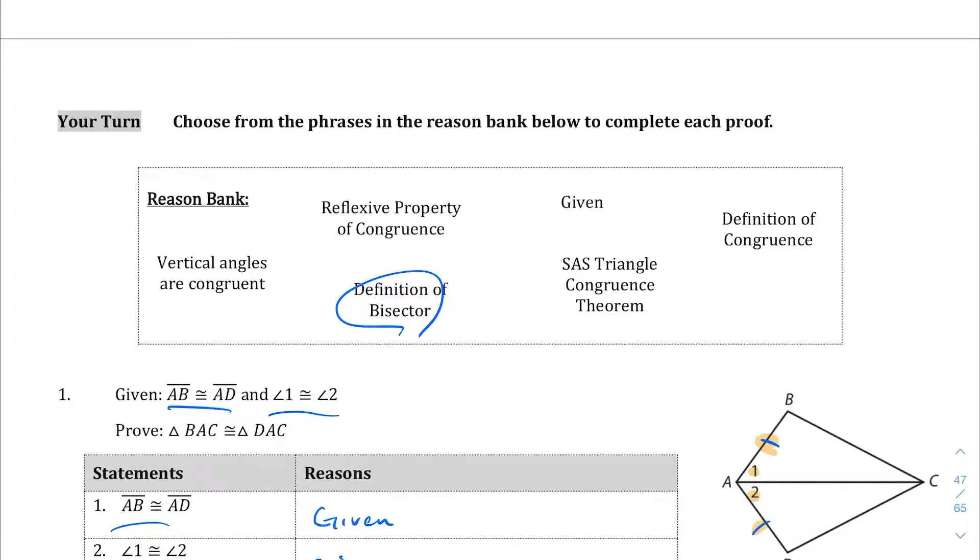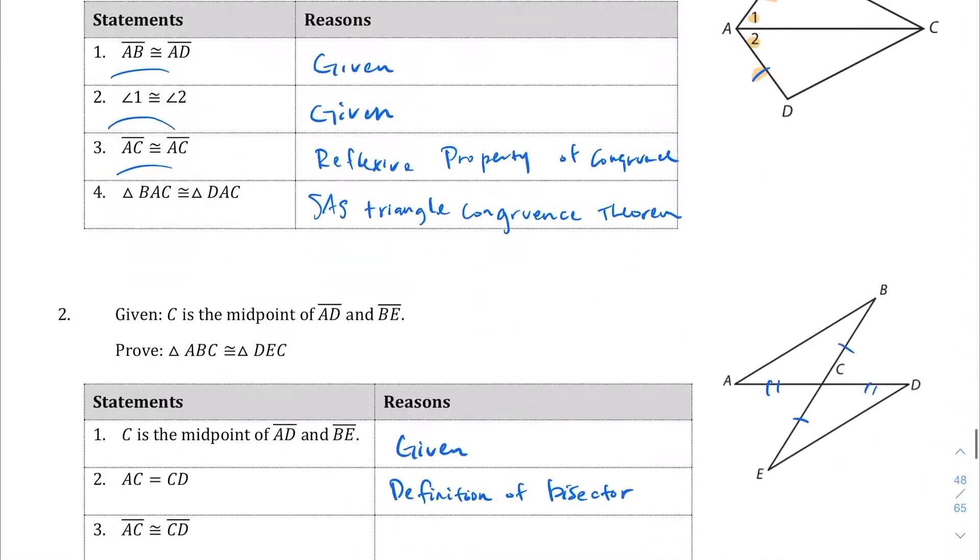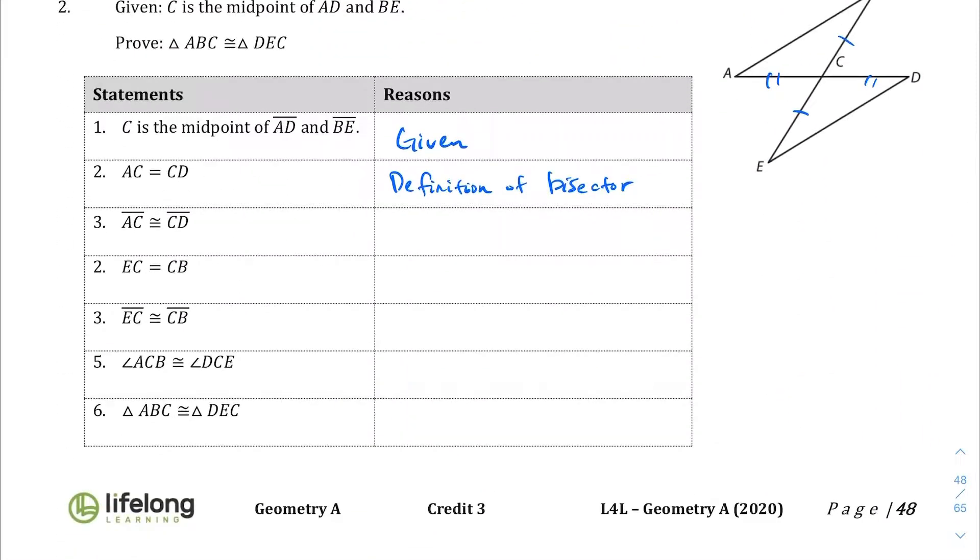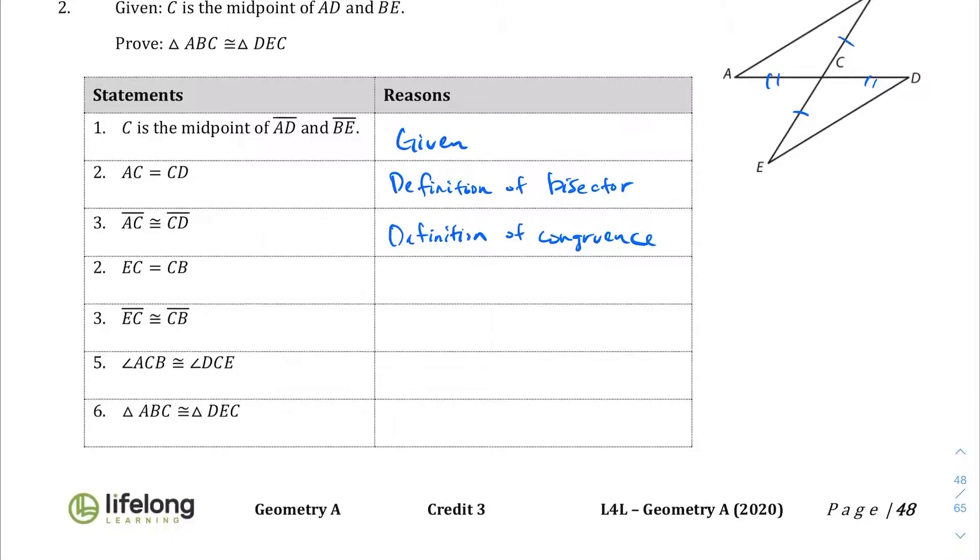And AC being congruent to CD is just, I don't know. That was definition of a bisector. They stated again. I'm just, I'm going to go with this definition of congruence. If those are equal, then side AC being congruent to side CD is going to be definition of congruence.